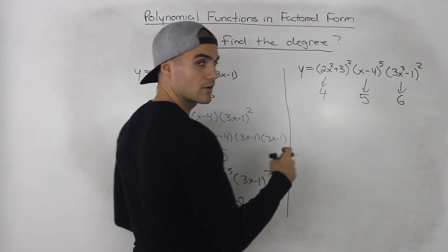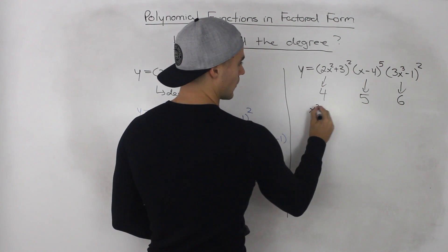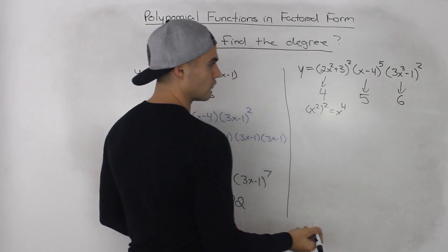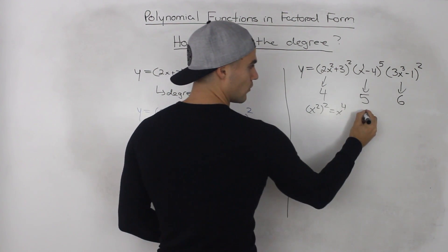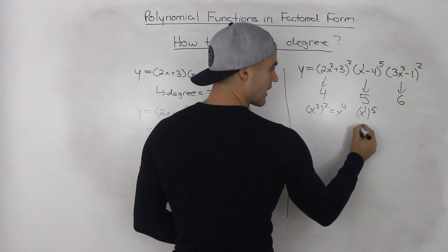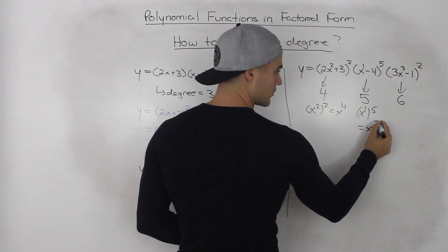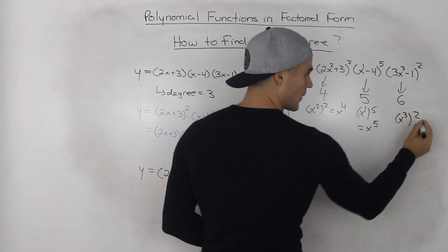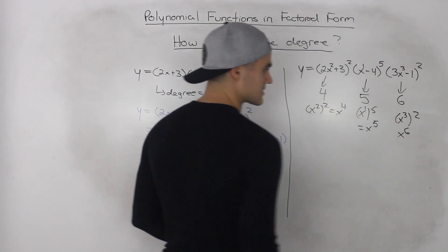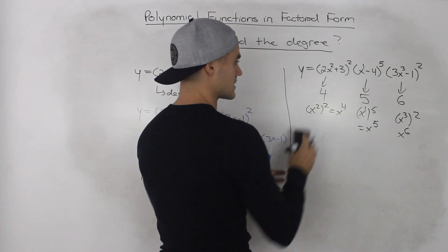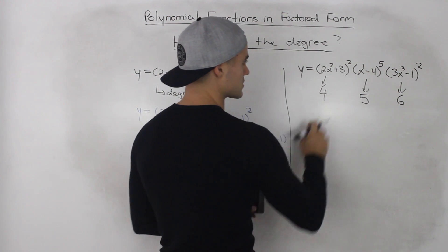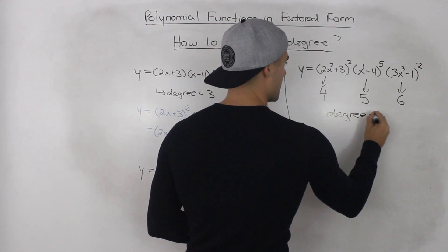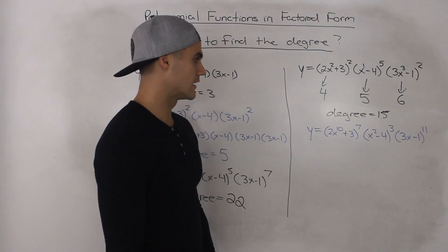To summarize that approach: we took x² to the power of 2, giving x^4. Then x^1 to the power of 5 gives x^5. Then x³ squared — multiply the exponents — gives x^6. So degree of 4, degree of 5, degree of 6. Add them all up: 4 + 5 = 9, 9 + 6 = 15. So this polynomial has a degree of 15.